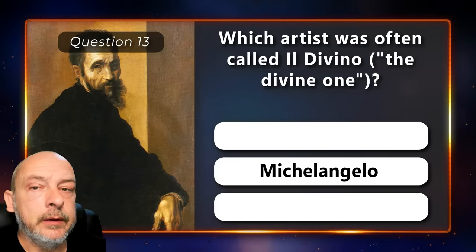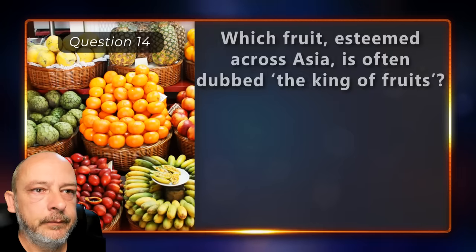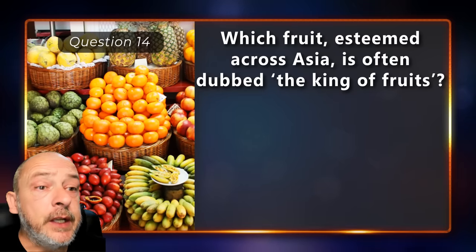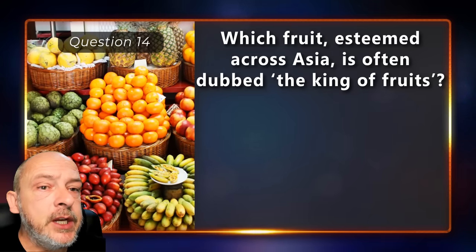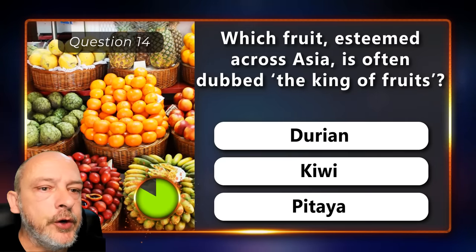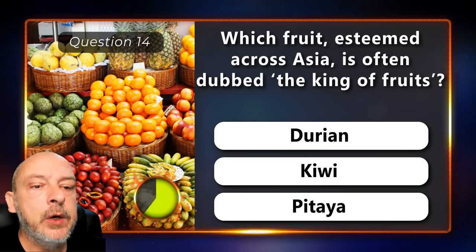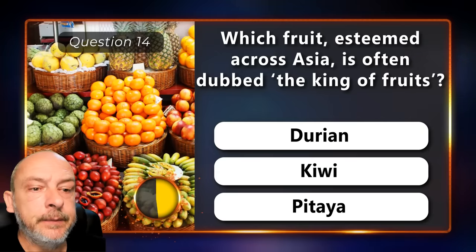Michelangelo. Which fruit esteemed across Asia is often dubbed the king of fruits — durian, kiwi, or pitaya?